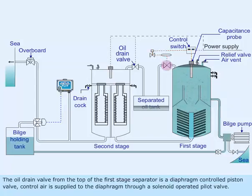The oil drain valve from the top of the first stage separator is a diaphragm-controlled piston valve. Controlled air is supplied to the diaphragm through a solenoid-operated pilot valve.